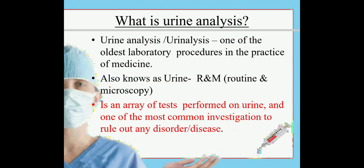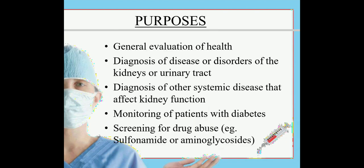What is urine analysis? Urine analysis is one of the oldest laboratory procedures in the practice of medicine. It is also known as urine R&M — routine and microscopy. It is an array of tests performed on urine and one of the most common investigations to rule out any disorder or disease.